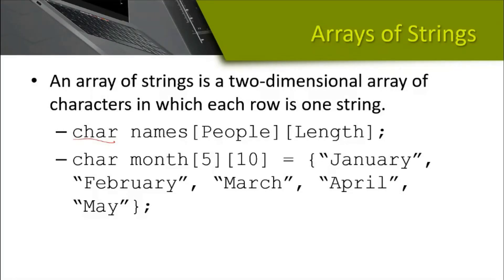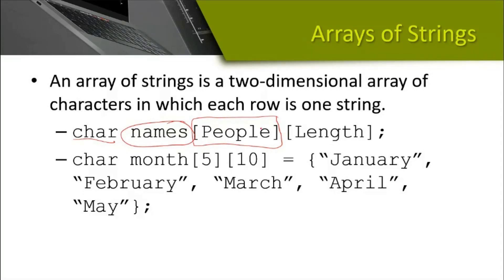We can declare an array of strings like this: the type is char, since each position stores a single character. The first dimension can be a variable like 'people' if it holds an integer value, or it can be any integer value. The second dimension, the length, should also be an integer value.